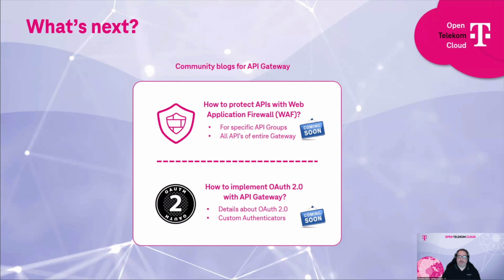Looking at what's next: we are working on two guidelines to publish in our community soon. One is about how to activate WAF on top of the API Gateway — you can use either the shared or dedicated WAF to protect your APIs. The second is using OAuth2 with a custom authenticator to support OAuth2 standards for API authentication.